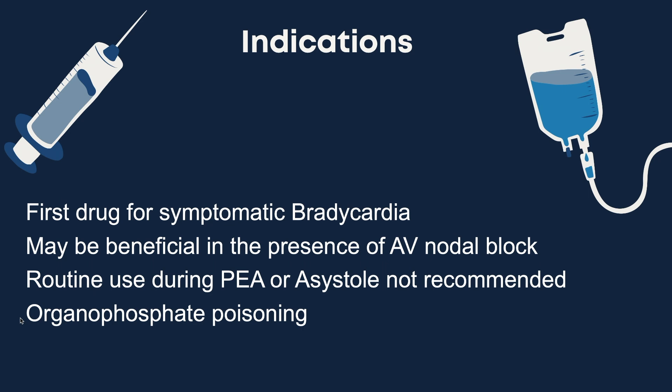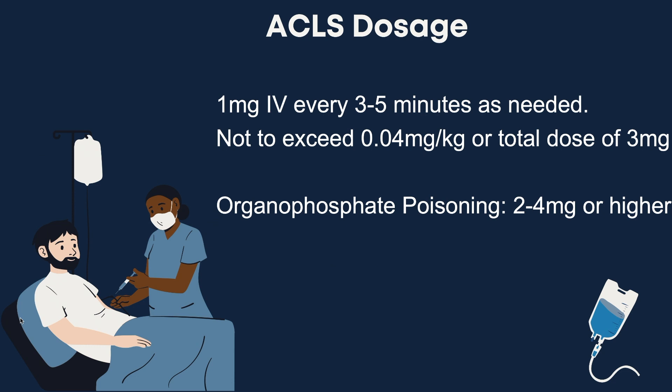For organophosphate poisoning, an extremely large dose may be needed. The ACLS dosage for Atropine is 1 milligram every 3 to 5 minutes as needed. Note that the dose has been increased from 0.5 milligrams to 1 milligram in the 2020 AHA guidelines. Do not exceed 0.04 milligrams per kilogram or a total dose of 3 milligrams. For organophosphate poisoning, a dose of 2 to 4 milligrams or higher will be required.